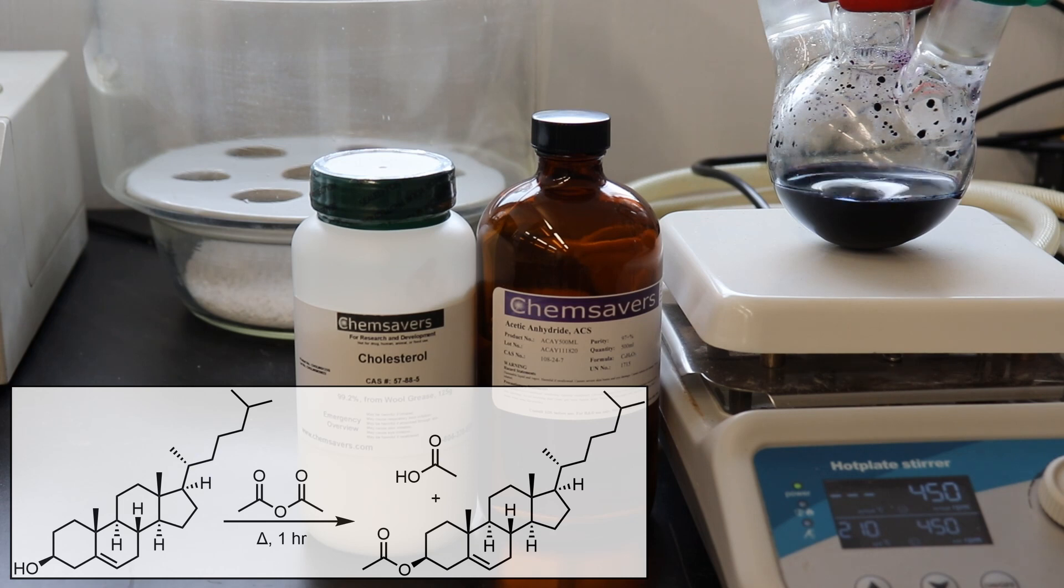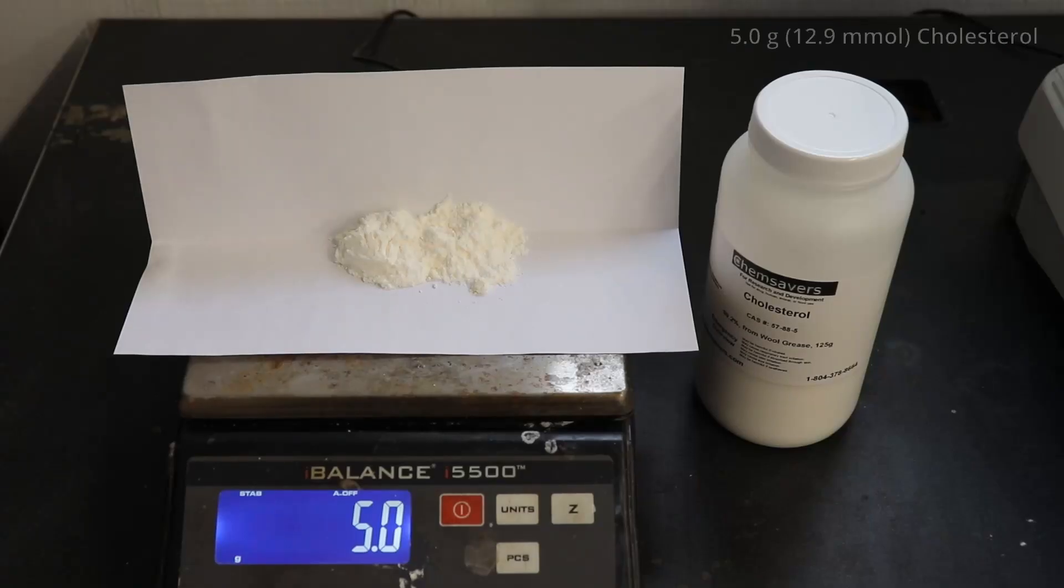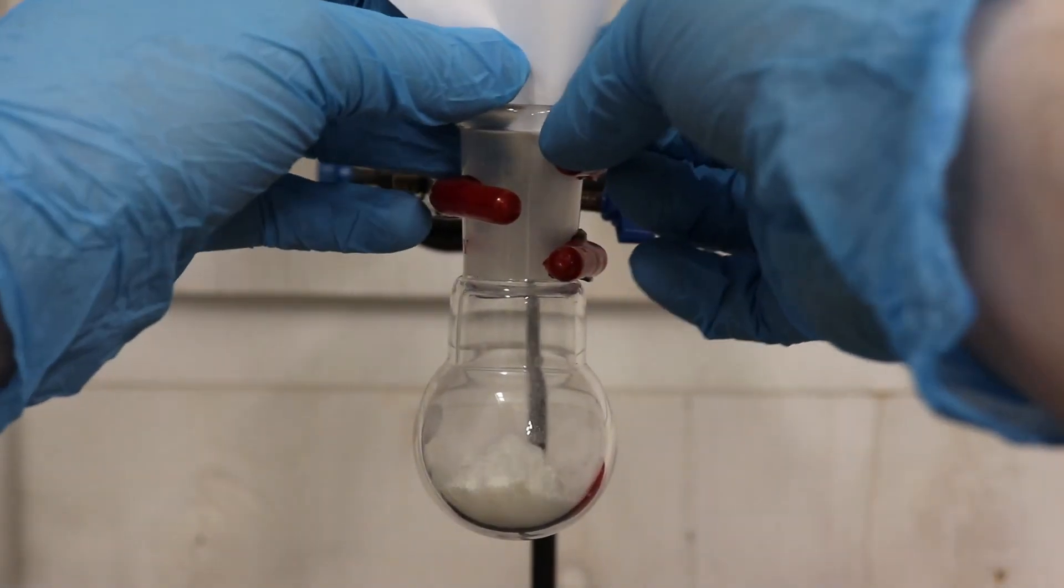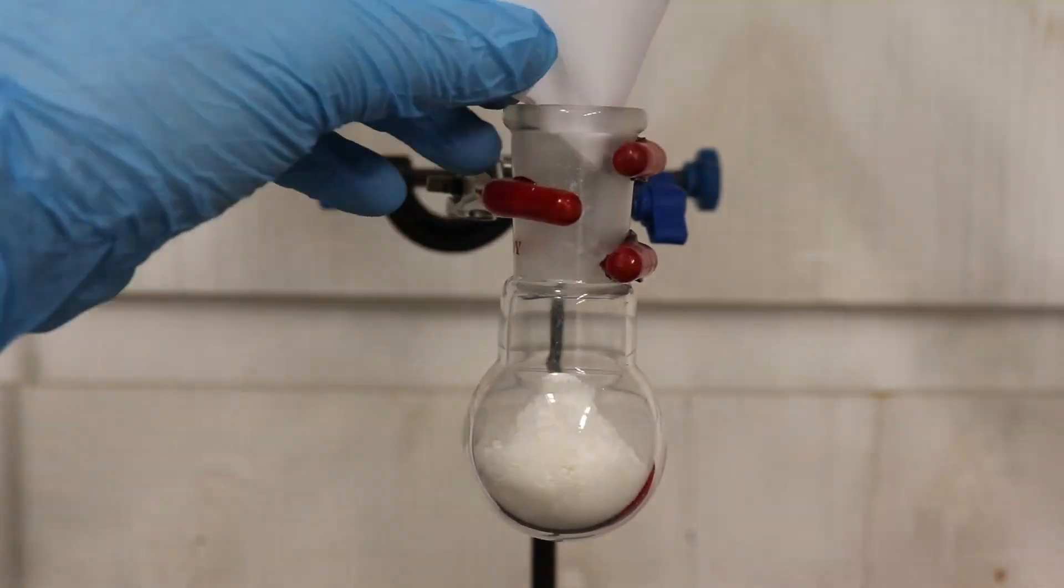However, I'm running this reaction just because I wanted to get some hands-on experience working with steroidal compounds, and this is a very straightforward reaction to start with. So, to begin, 5 grams of cholesterol was weighed out and added to a 50 milliliter round bottom flask.